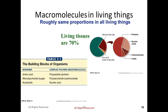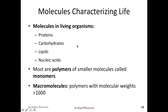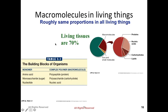Then there are monosaccharides, like carbohydrates. The major complex molecule is carbohydrates, and the building block for carbohydrates is actually sugar, or monosaccharides. Then we also have nucleic acid, which is mostly genetic information. The building block of nucleic acid is the nucleotide — a single nucleotide.